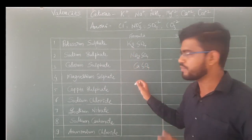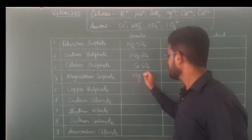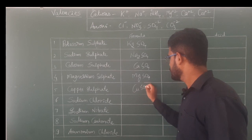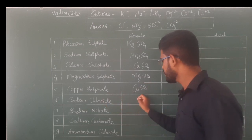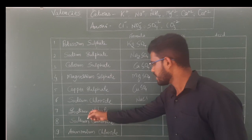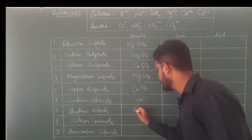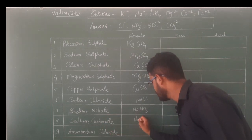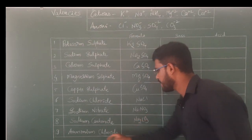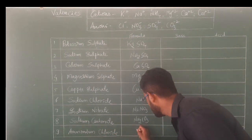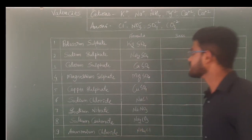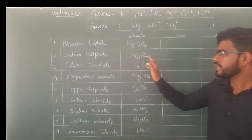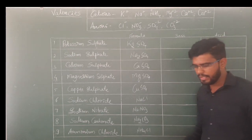Magnesium sulfate is MgSO₄. Copper sulfate is CuSO₄. Sodium chloride is NaCl. Sodium nitrate is NaNO₃. Sodium carbonate is Na₂CO₃. Ammonium chloride is NH₄Cl. We simply cross-multiply the respective valences given in the name of the compound to get these formulas.